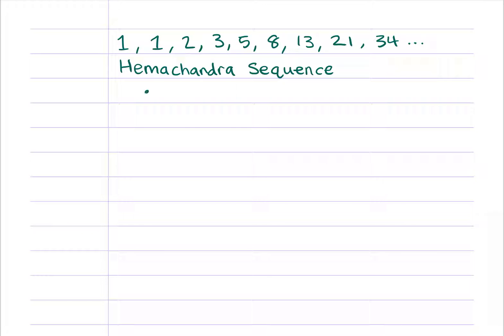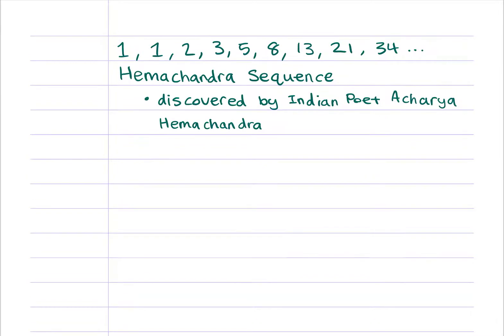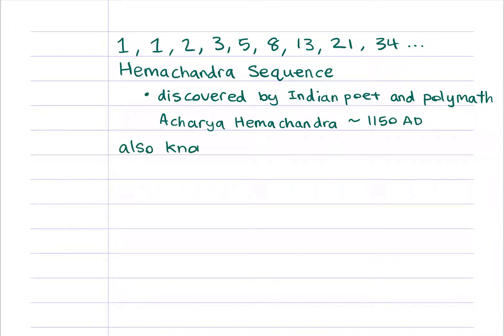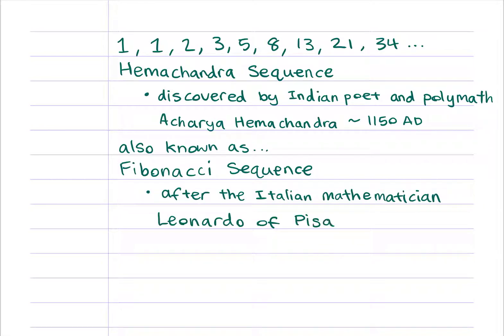Thirteen. This is a Hemachandra sequence discovered by the Indian poet and polymath, Acharya Hemachandra, around the year 1150. Now, it's more commonly known as the Fibonacci sequence, after the Italian mathematician Leonardo of Pisa, also known as Fibonacci.